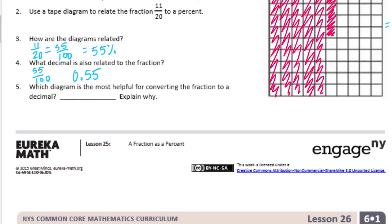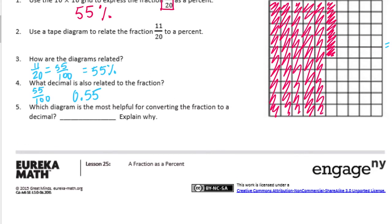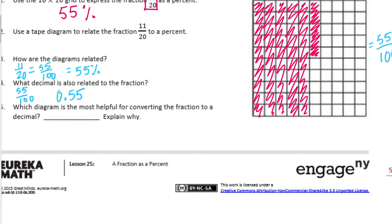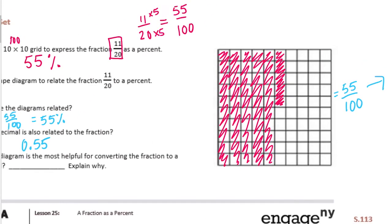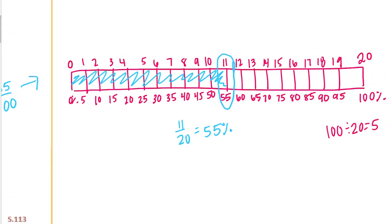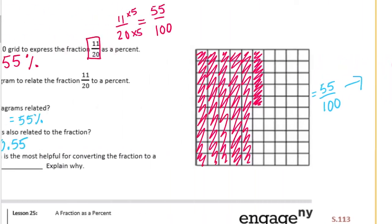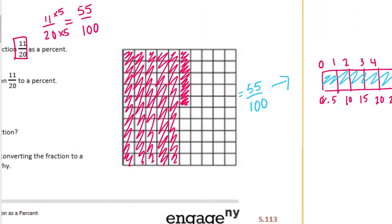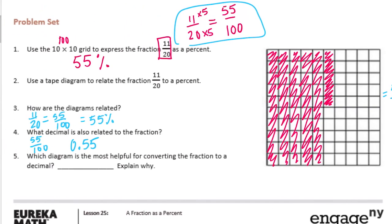Which diagram is most helpful for converting the fraction to a decimal? Explain why. So this is completely up to you — you just need to say which one you think was more helpful, either the 10 by 10 grid or the tape diagram. I personally think that the 10 by 10 grid is just simpler, because all you have to do is make an equivalent fraction. But it's up to you, so just say which one you like better and why.